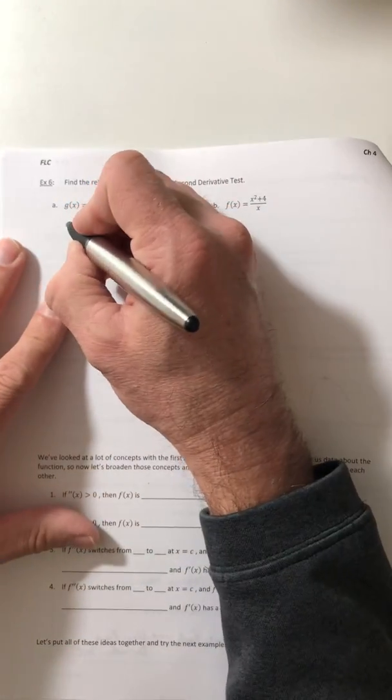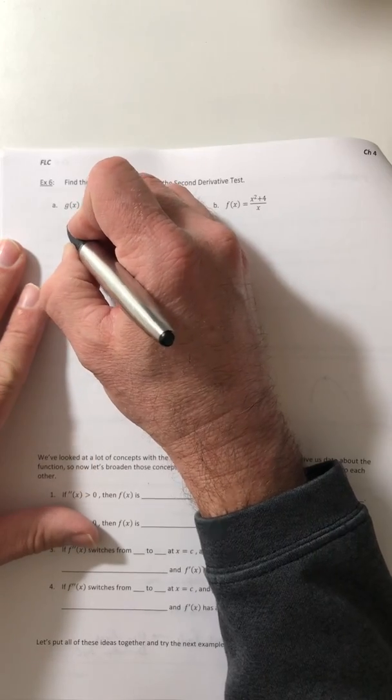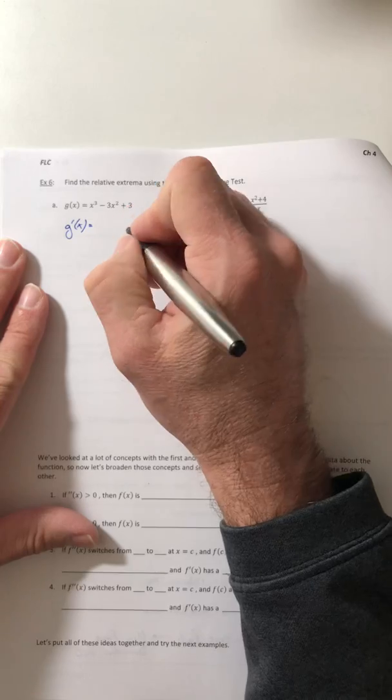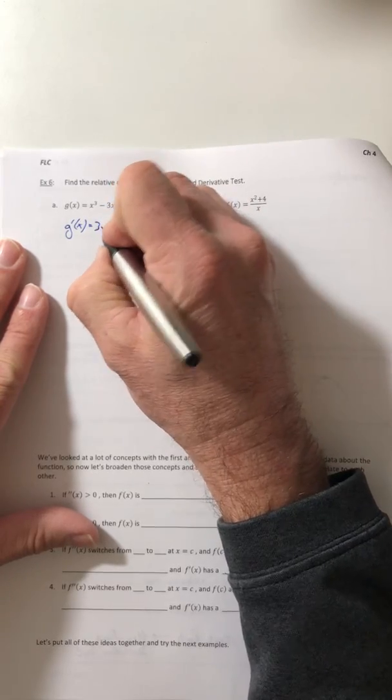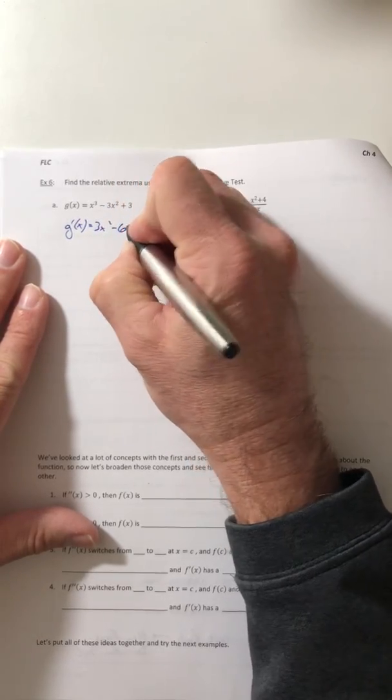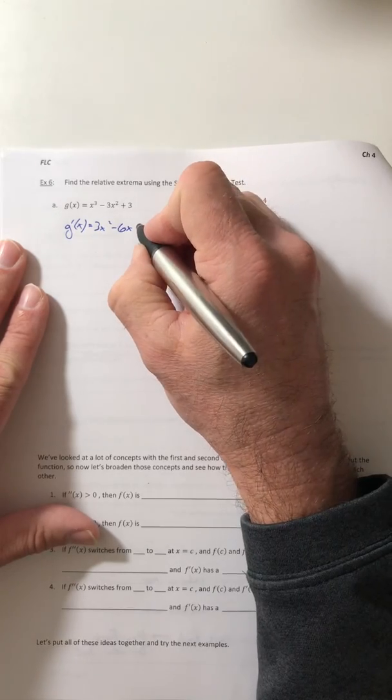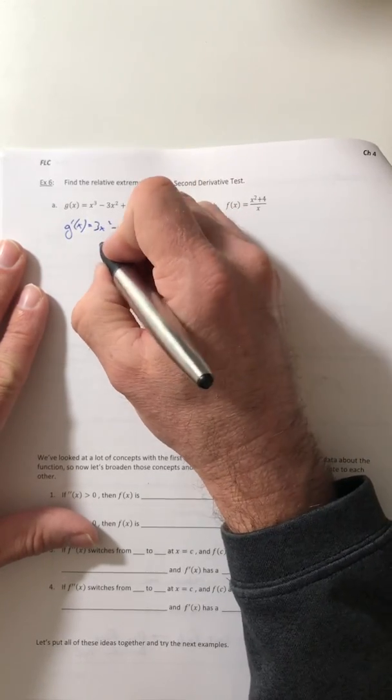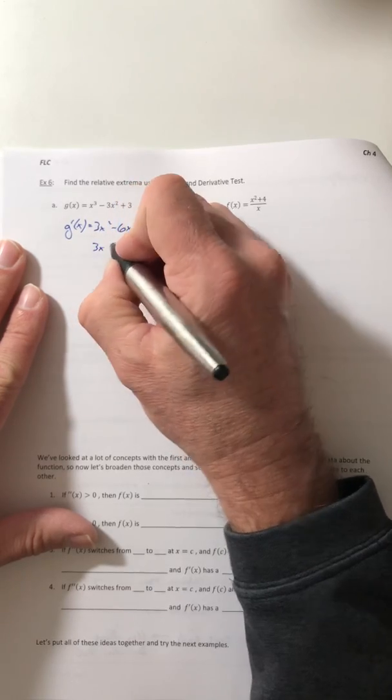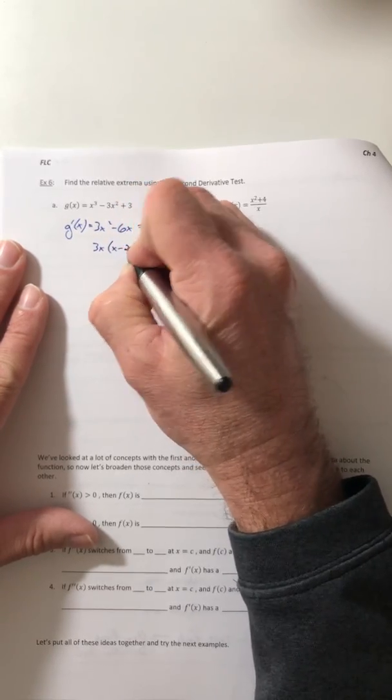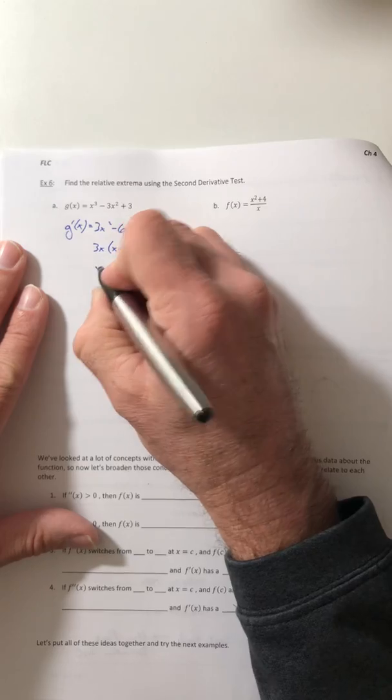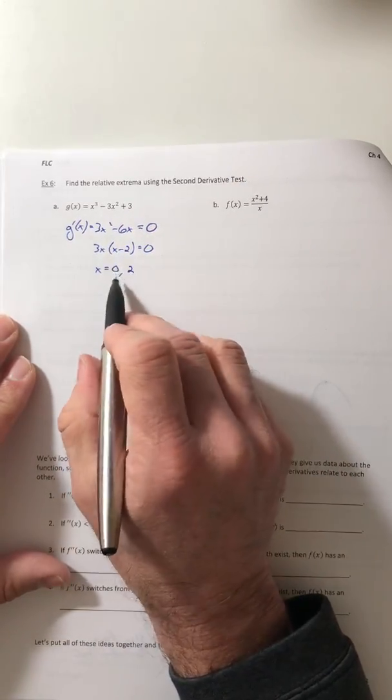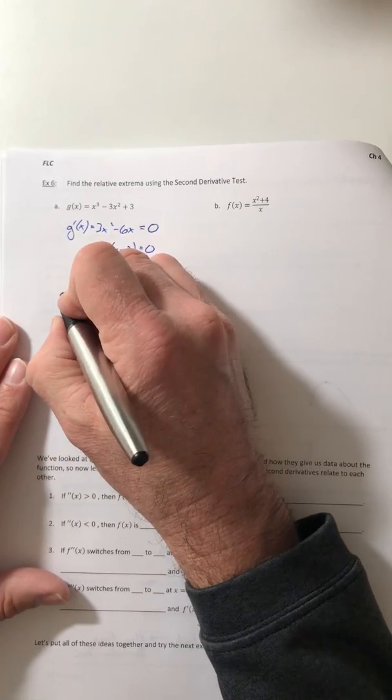So we've got to find your critical numbers. That means you're going to get the first derivative, so 3x squared minus 6x, and we're going to set that equal to zero and start solving for x. So you can factor out a 3x, so x would equal zero and a positive two. So these are what we're going to test.